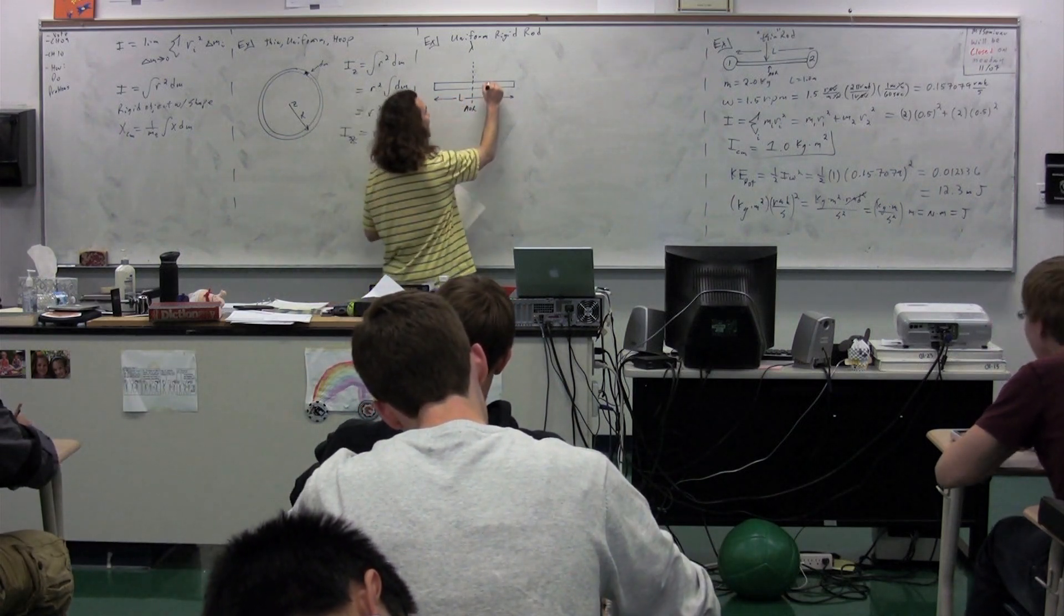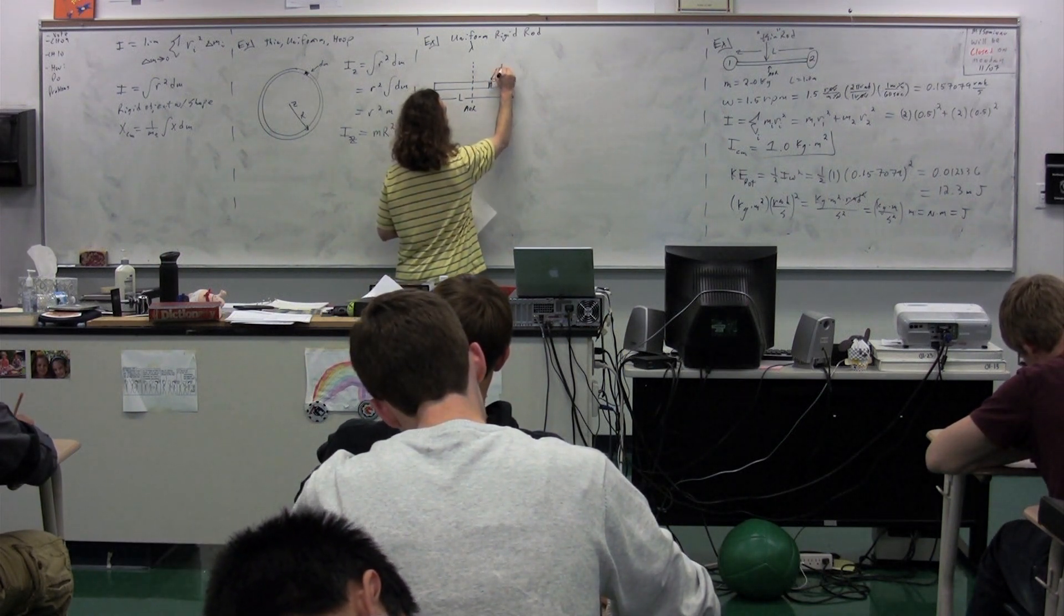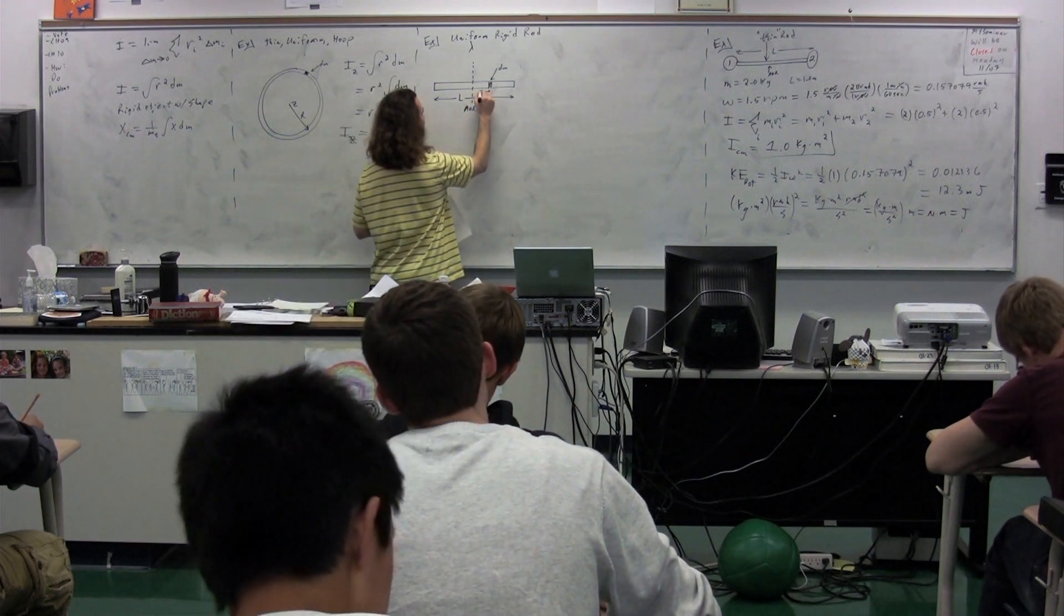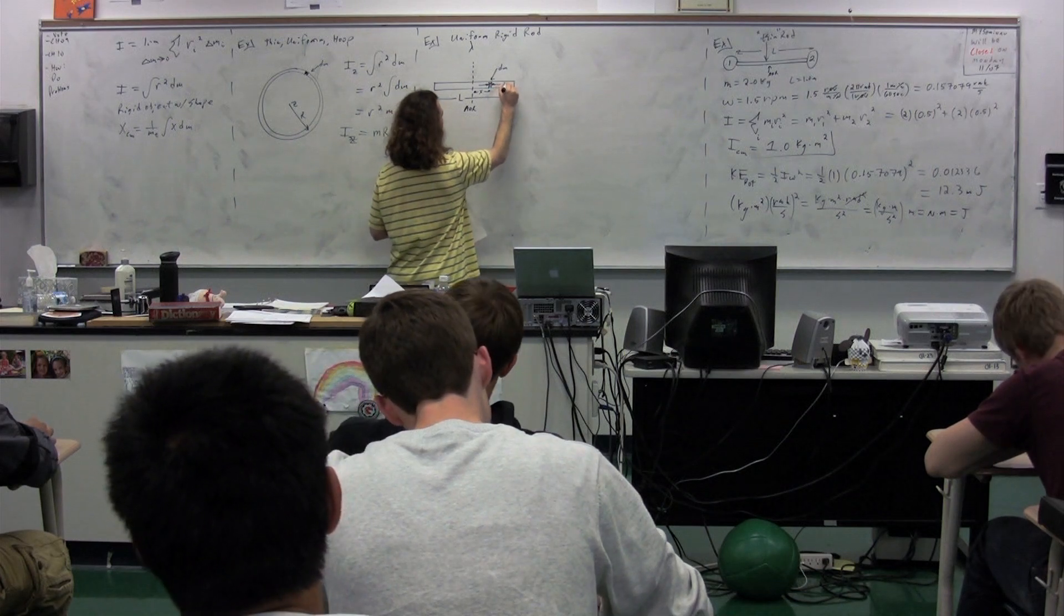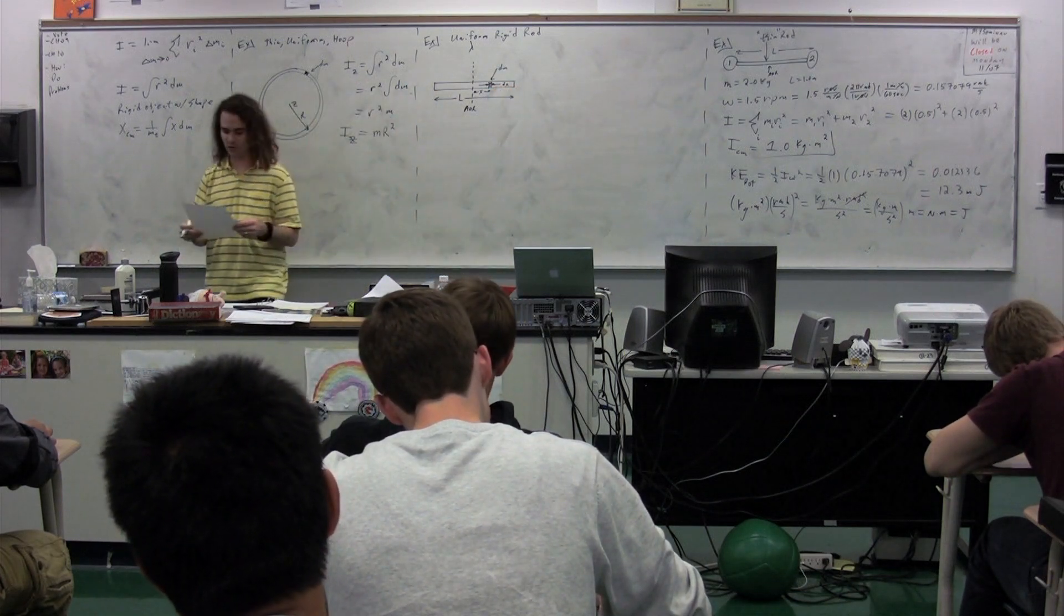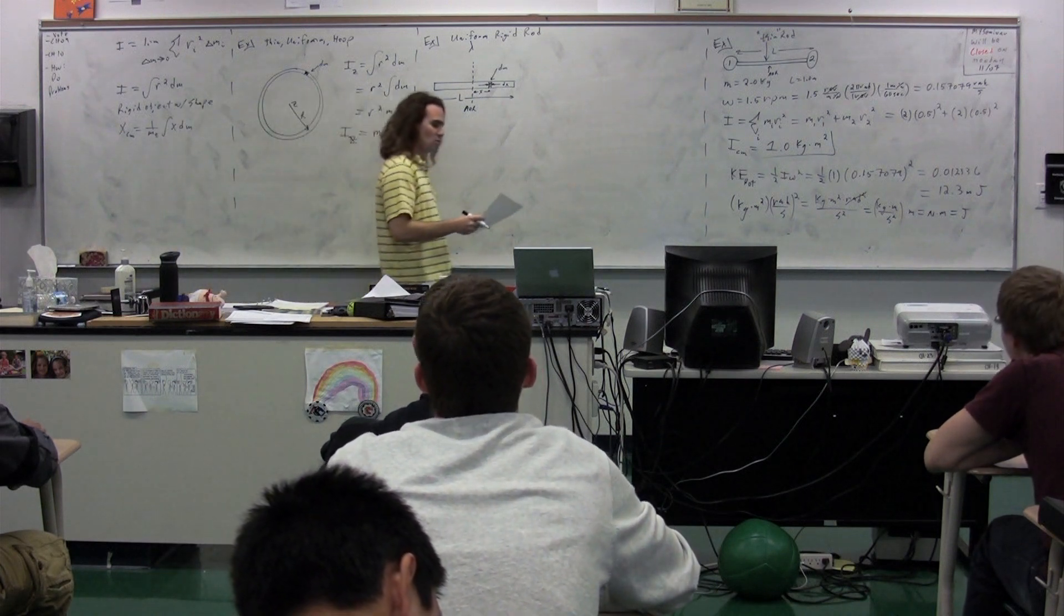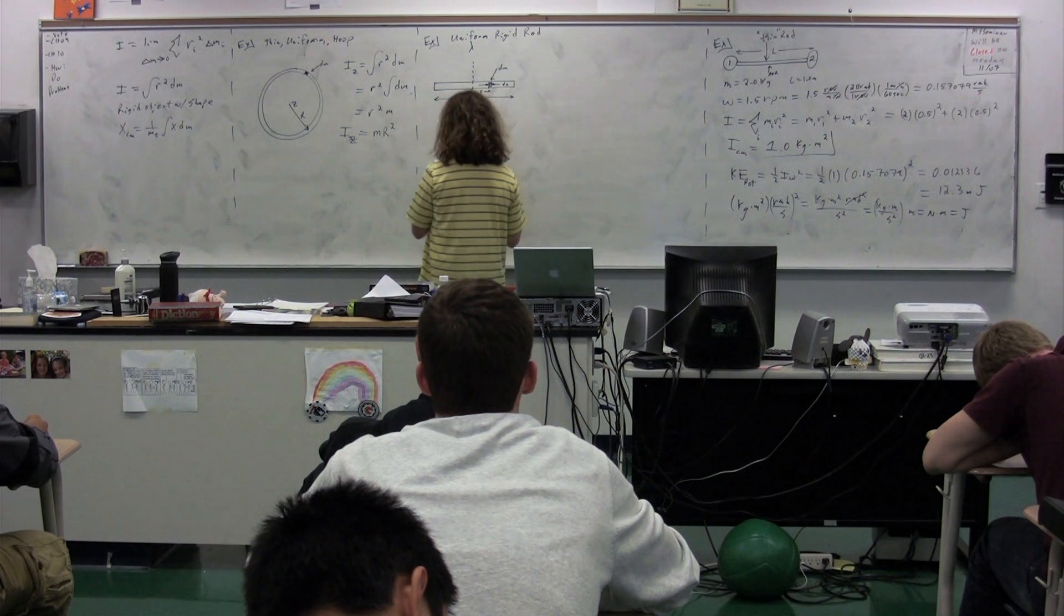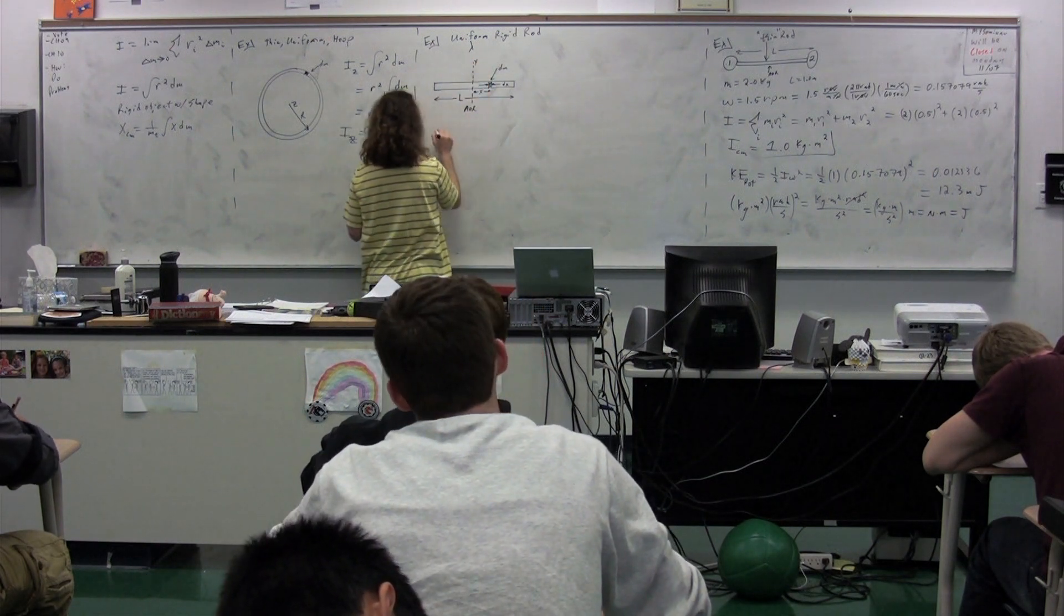We are again going to split it into an infinitely large number of infinitesimally small pieces, dm, which are all going to be located at a distance x from the axis of rotation. And the thickness of each one of these, or the width, excuse me, of each one of these is going to be dx. So you can see there's a lot of redundancy here. This is very similar to what we did before. We're figuring out the moment of inertia about this axis here, which I'm going to call the y-axis.